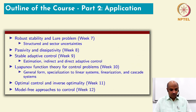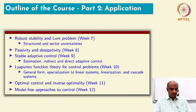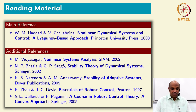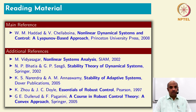Robust stability covers the fact that knowledge of exact parameters is never fully available, so we cover quite a bit of that in one of the weeks. An all-encompassing theory including robust control and robust stability falls under something called dissipativity, with applications in adaptive control and a general framework for nonlinear system control. Finally, we touch upon some modern topics still under research. About 80 percent or more of the material comes from the book by Hadad and Chalaboyana, 'Nonlinear Dynamical Systems and Control: A Lyapunov-Based Approach.'